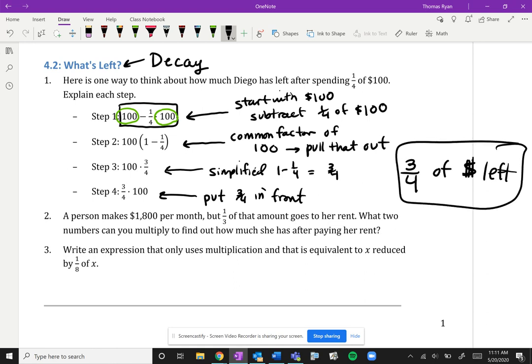All right, so let's think about this then in number two. A person makes one thousand eight hundred dollars per month, but one-third of that amount goes to pay her rent. What two numbers can we multiply to find out how much she has after paying her rent? Well think about it, right?